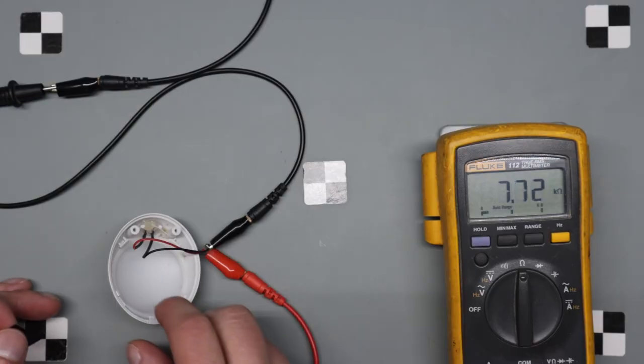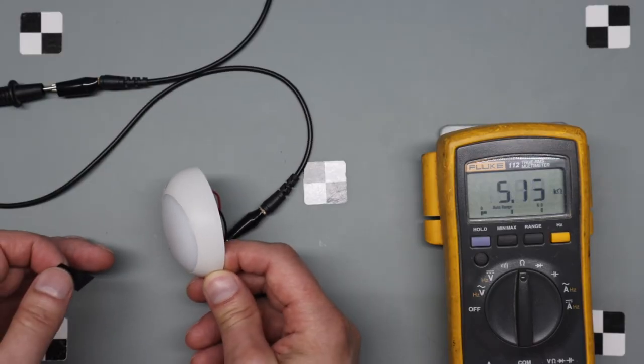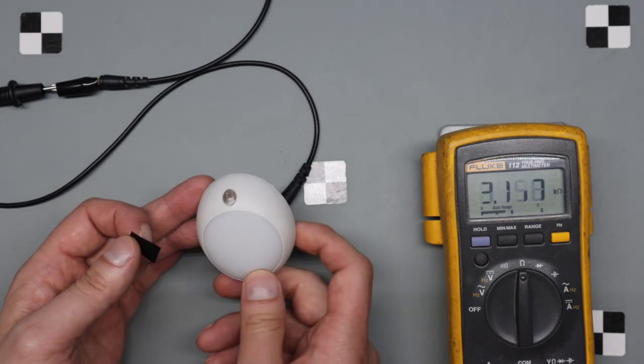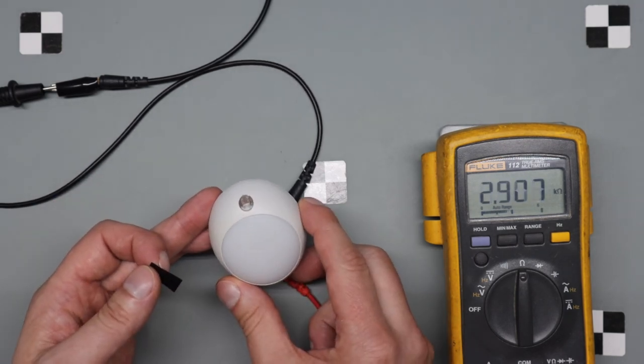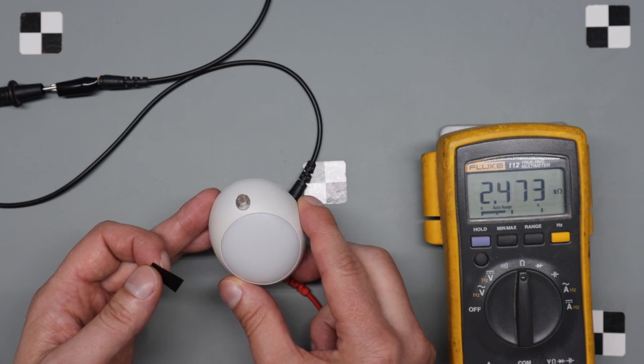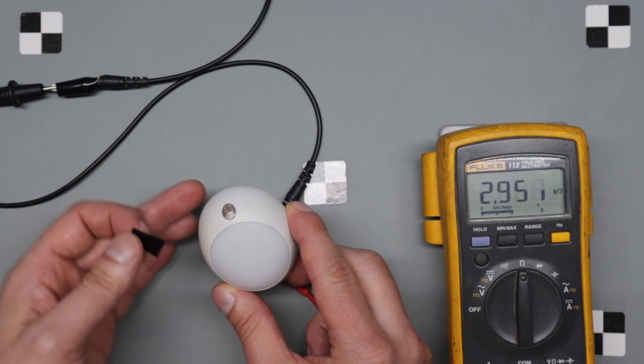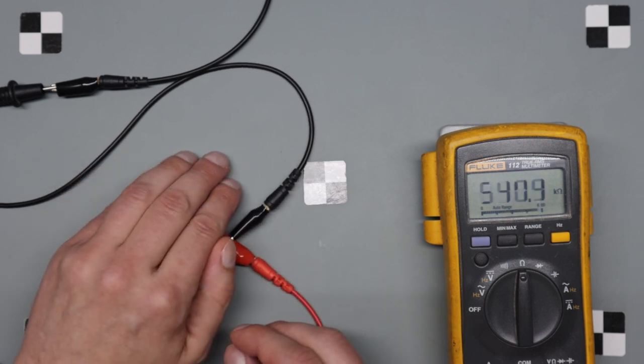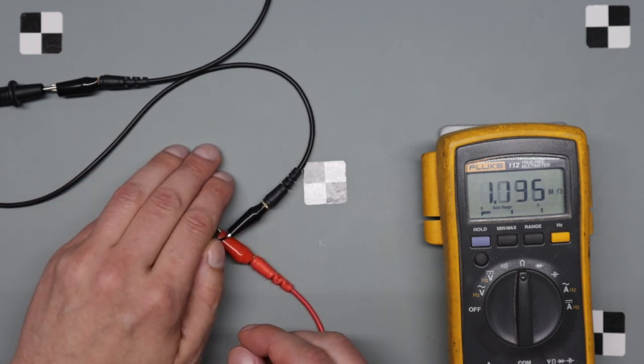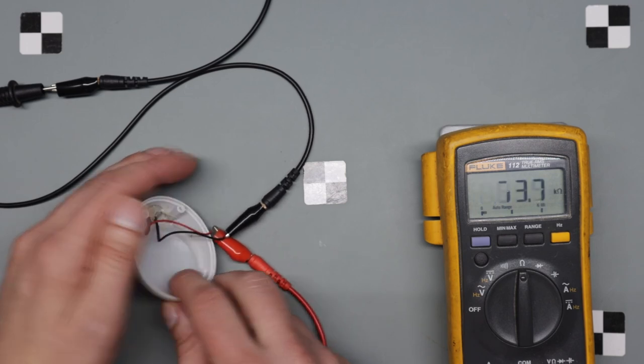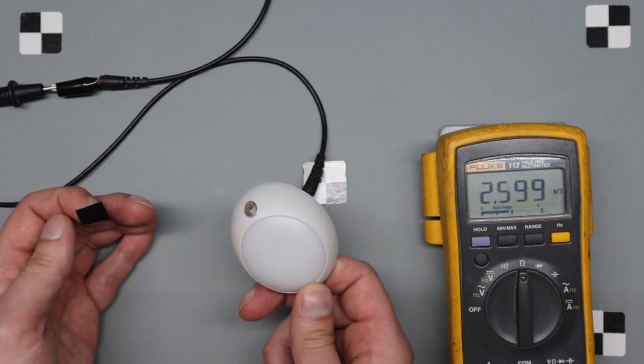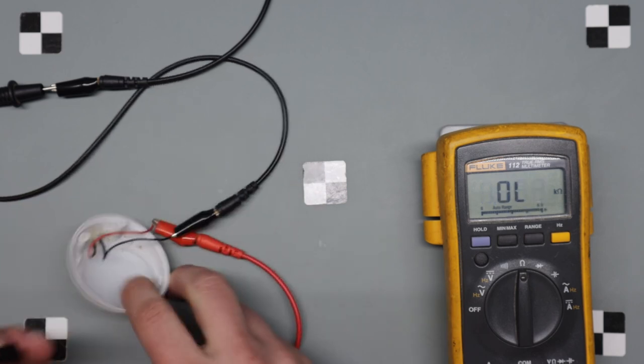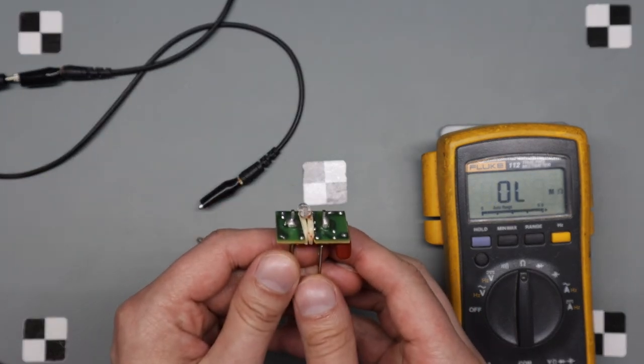I'm going to go over how this photoresistor functions. So in full light, well, bench light, we have a low resistance about 2k, 2, 3k. And we close it off, cover it up completely or try to. And we get up into the mega ohms. So when it's dark, high resistance. When it's light out, low resistance.